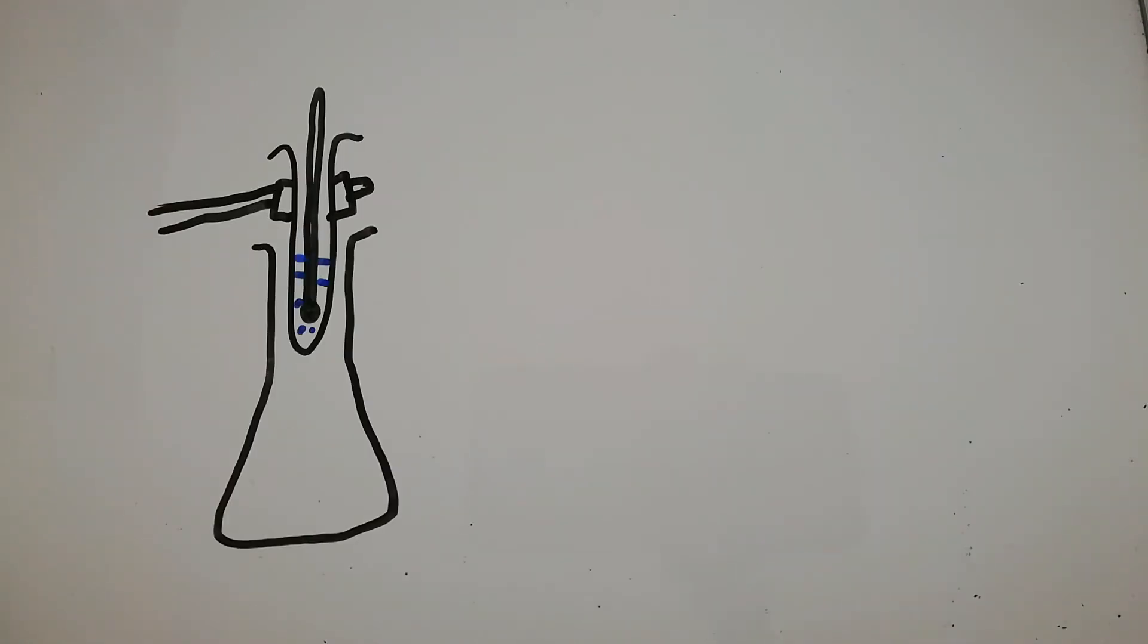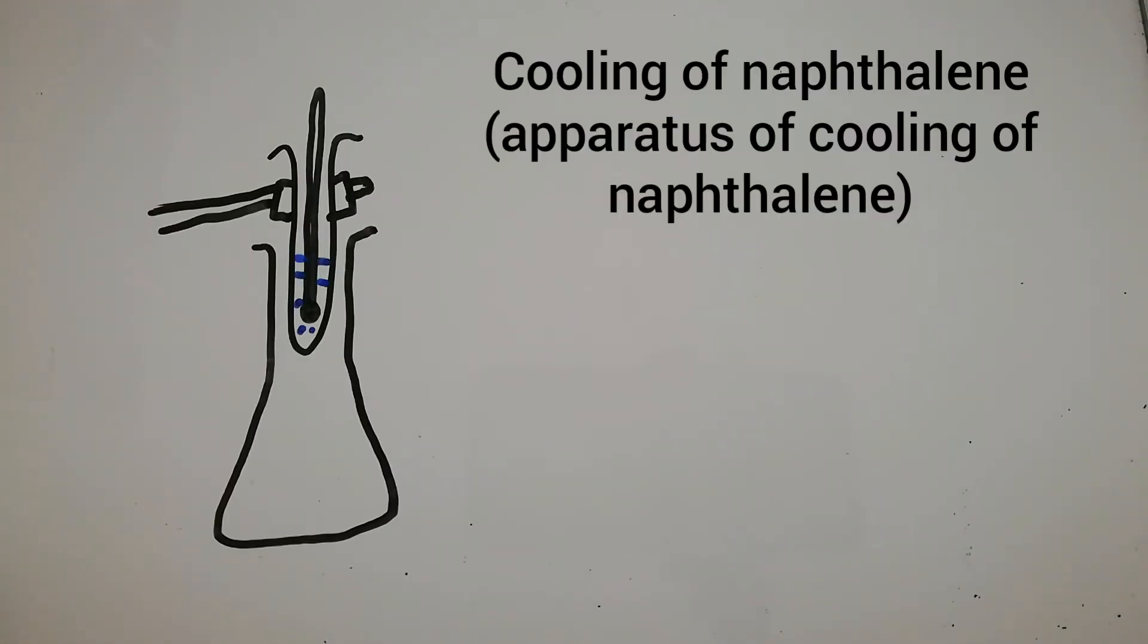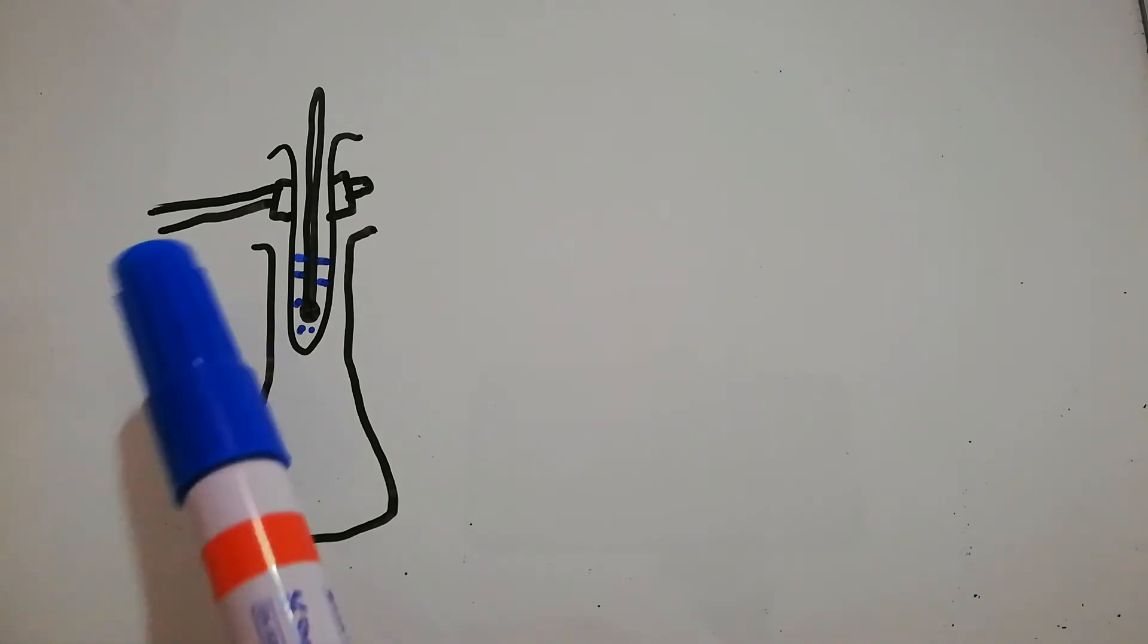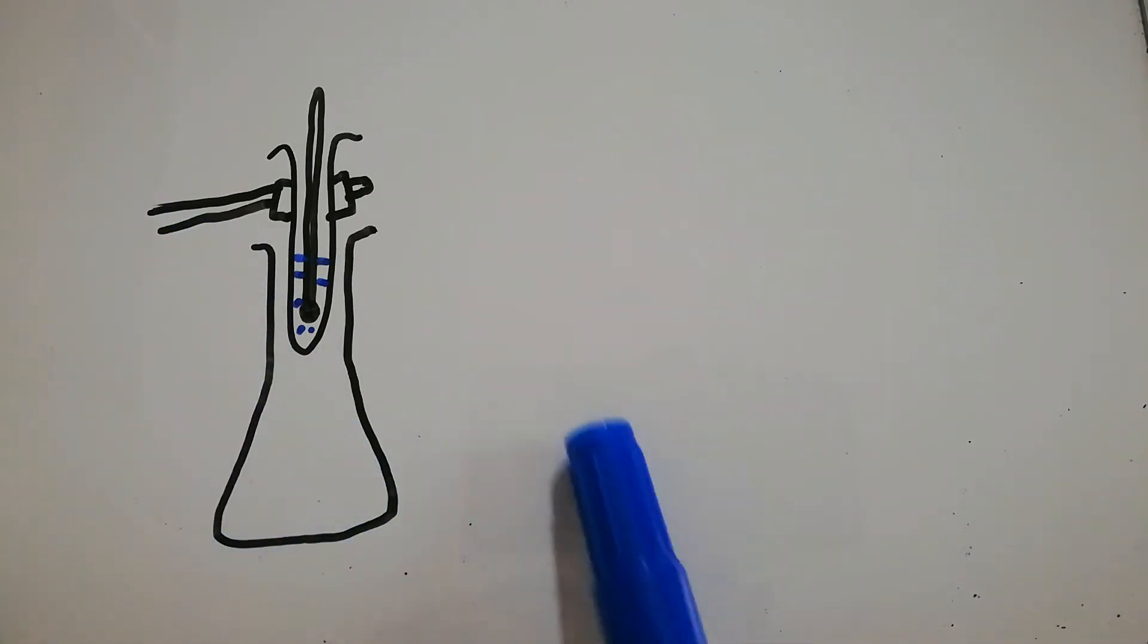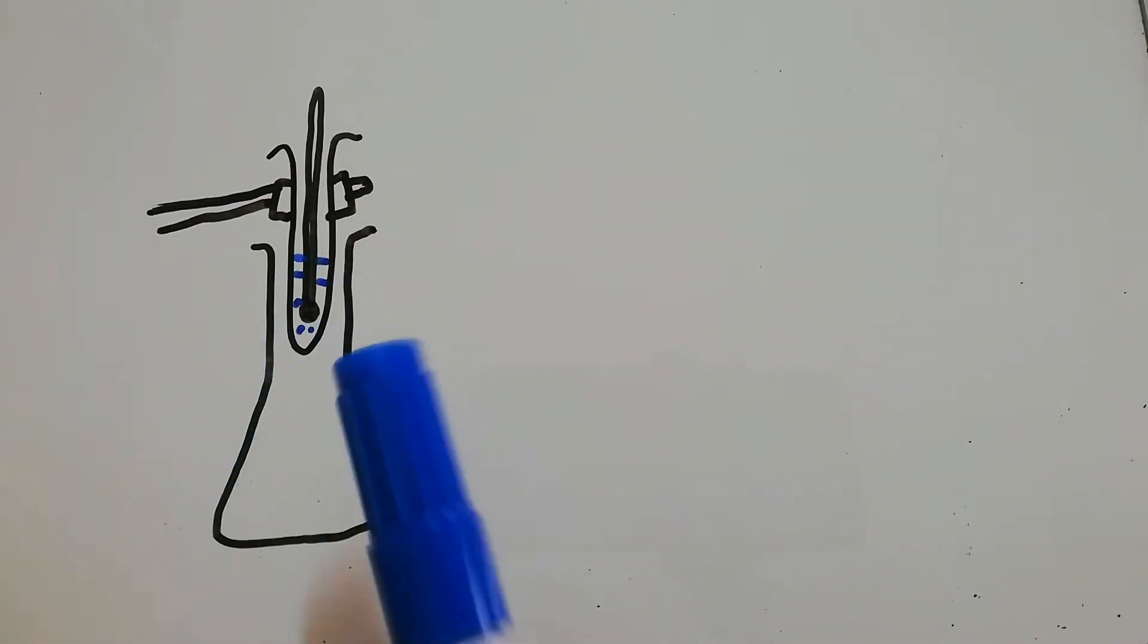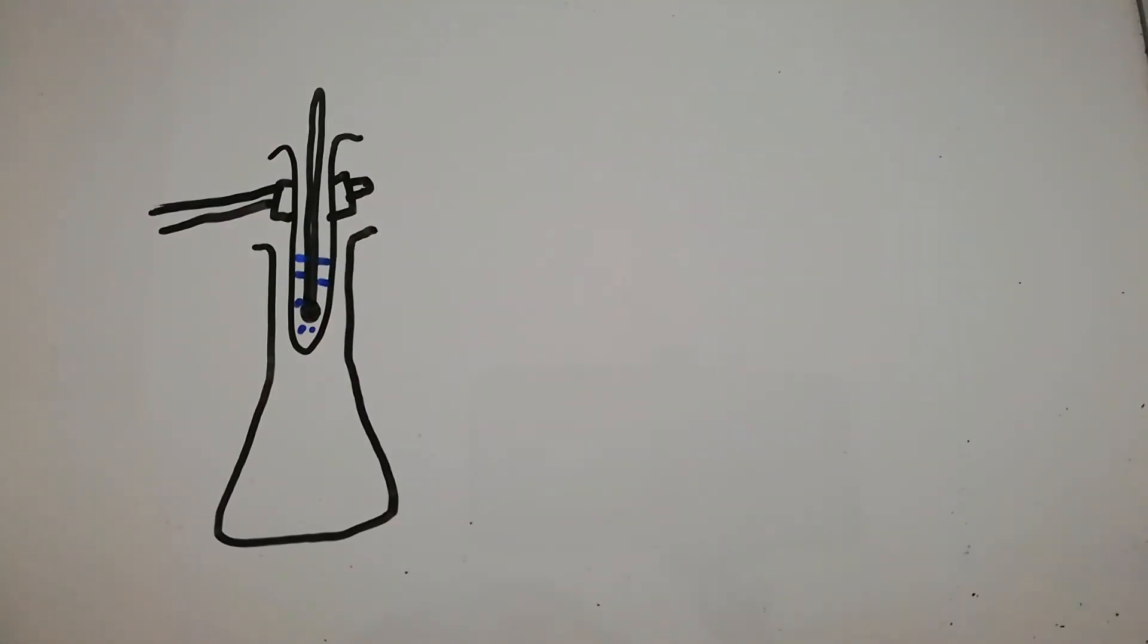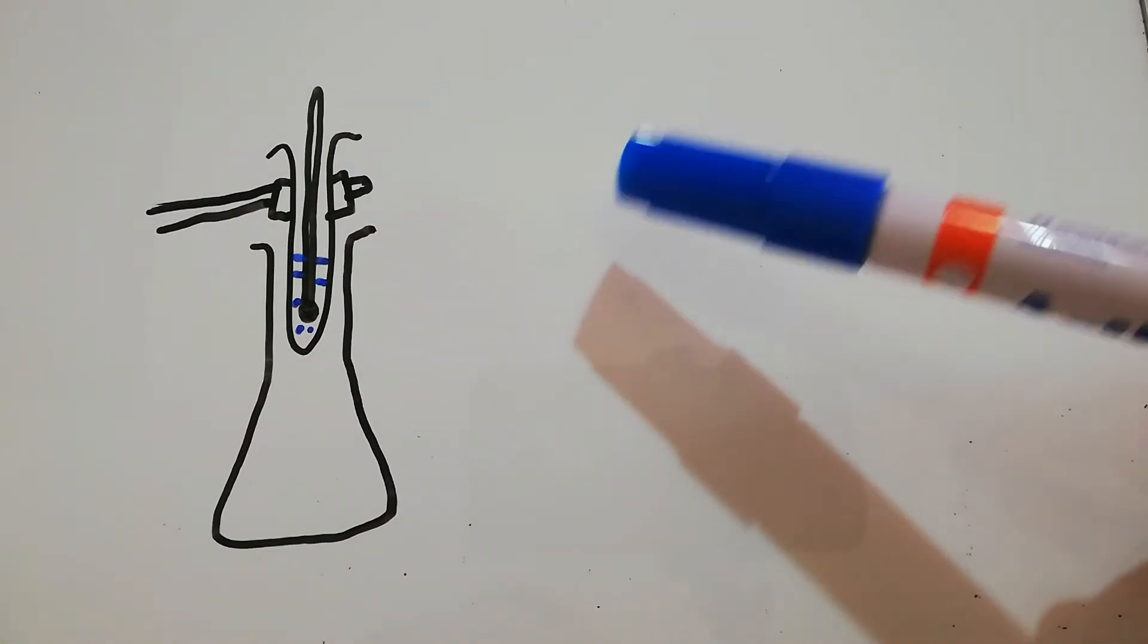Next, we look at the cooling curve of naphthalene. The apparatus should be the retort stand here, the conical flask, the liquid naphthalene inside the test tube, and the thermometer. This is the boiling tube.